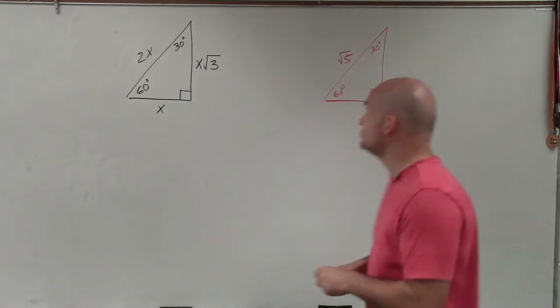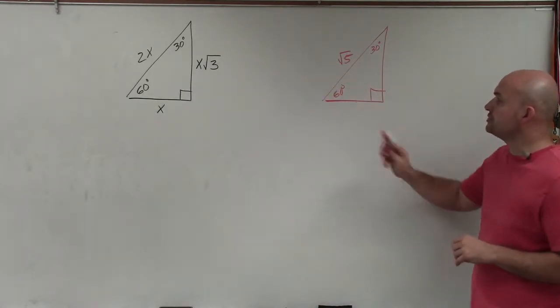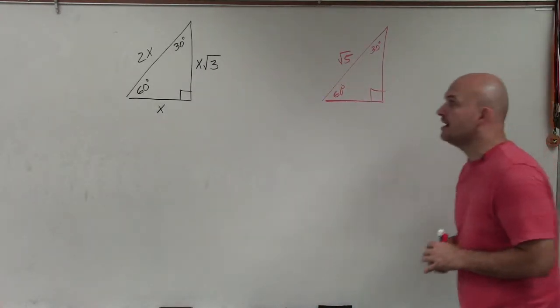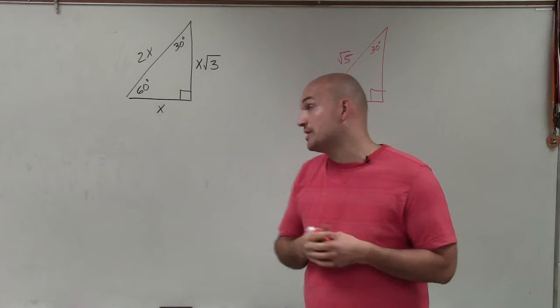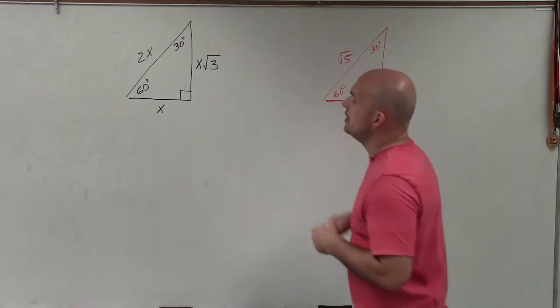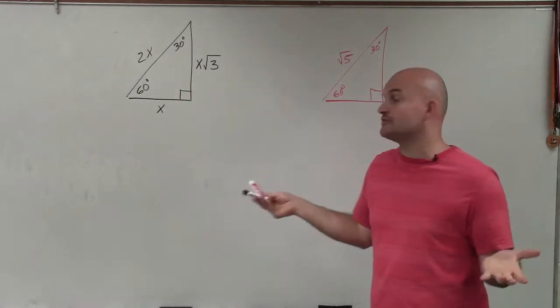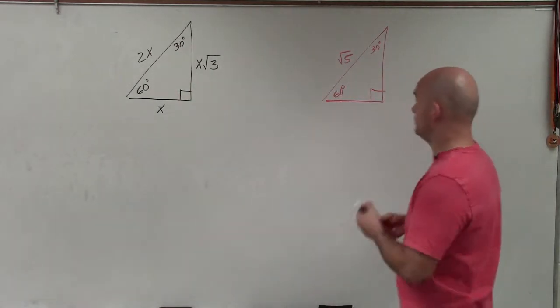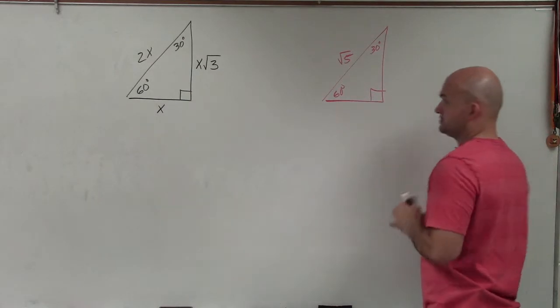Welcome ladies and gentlemen. What I like to do is determine the missing short leg and long leg when given a 30-60-90 triangle. You can see the relationships of the sides of a 30-60-90 triangle, and you can see that I am provided the hypotenuse.